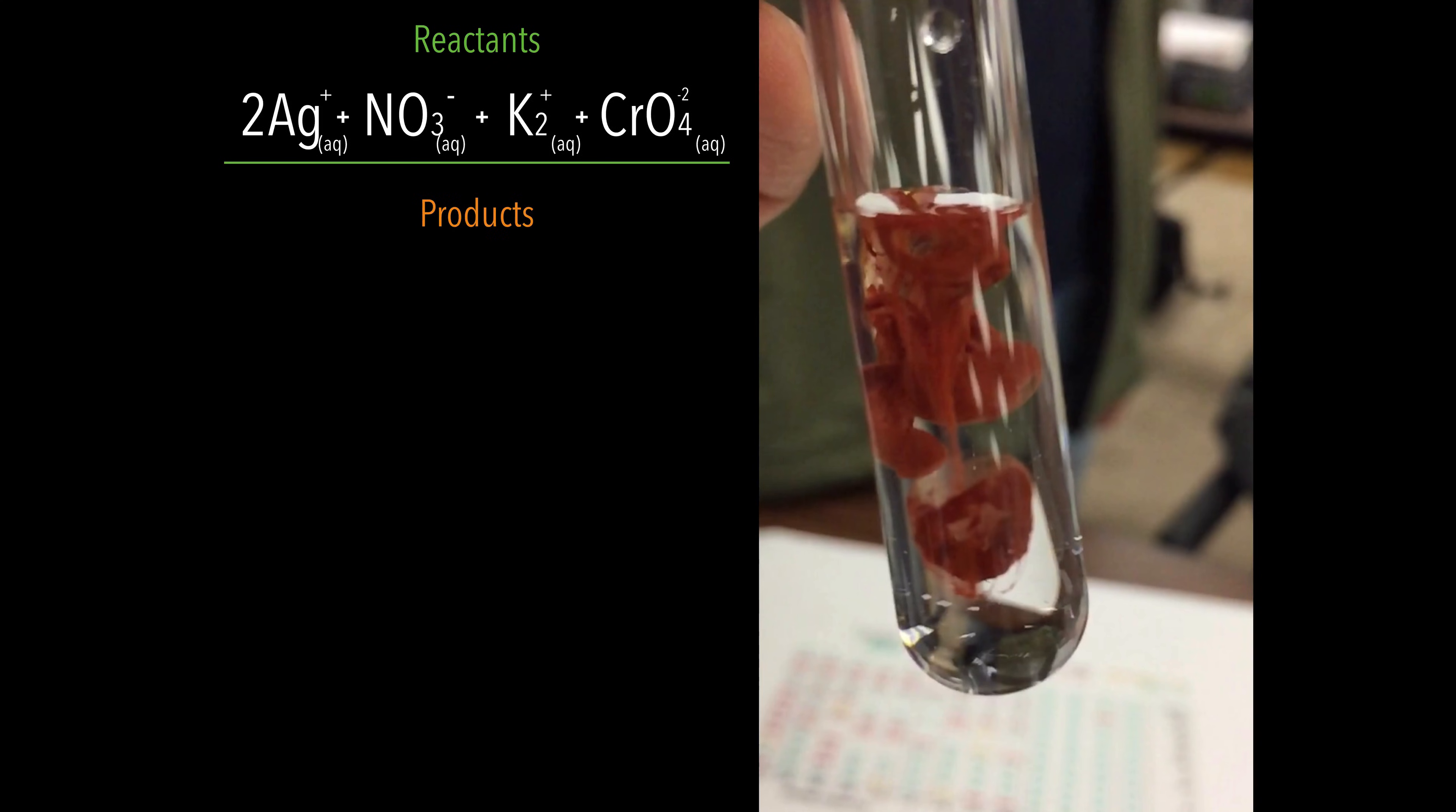Now let's take a look at the product side. The product side has silver chromate solid and potassium nitrate aqueous. Potassium nitrate aqueous on the product side is again dissociated. Anytime you see that term aqueous with compounds mixed together, they're technically not actually together. They're dissociated, unbonded, free floating in that water solution.